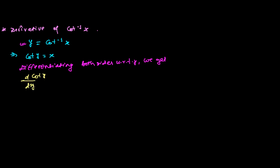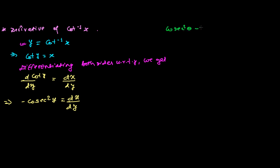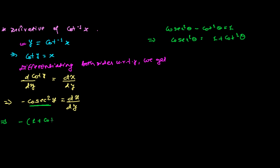The derivative of cot(y) with respect to y equals dx/dy, and the derivative of cot(y) is minus cosec²(y), so minus cosec²(y) = dx/dy. I want to remind you of the formula from trigonometry: cosec²θ − cot²θ = 1, so cosec²θ = 1 + cot²θ. Therefore, in place of cosec²(y), I can write minus(1 + cot²(y)) = dx/dy.